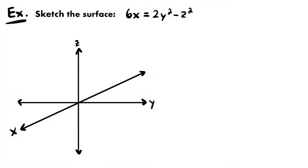For our last example, we want to sketch the surface: 6x = 2y² - z². The first thing I notice is that we have three variables — x, y, and z. One variable stands out: x is only to the power of 1 while y and z are squared. When you have one degree-1 variable and two degree-2 variables, there are only two possible surfaces: an elliptic paraboloid or a hyperbolic paraboloid.